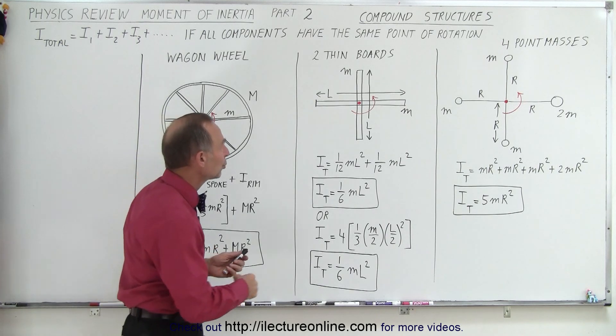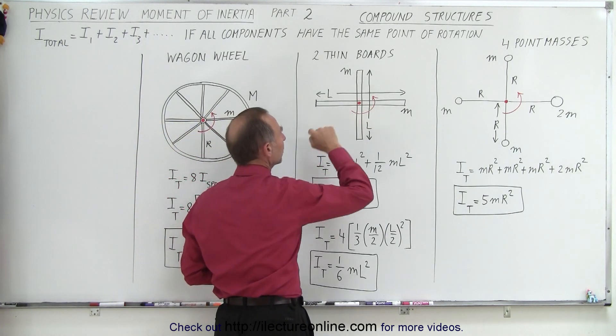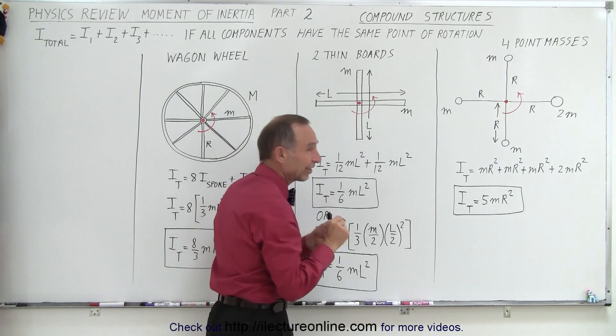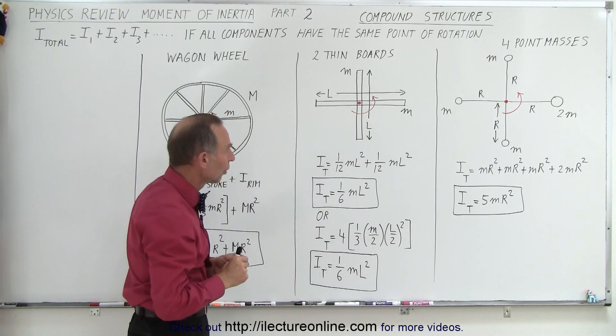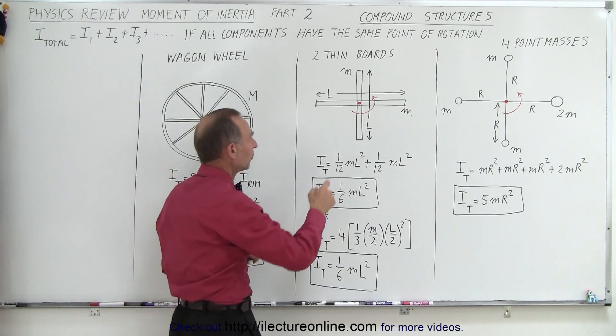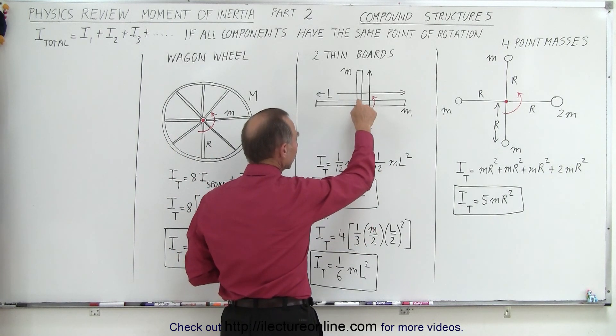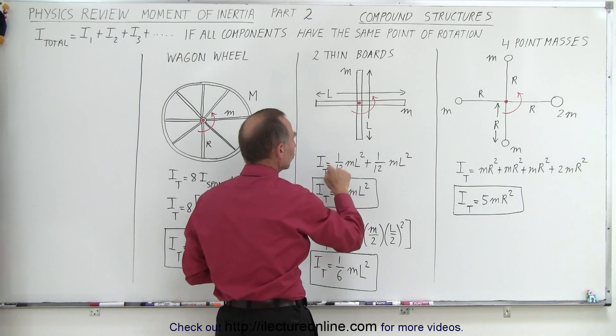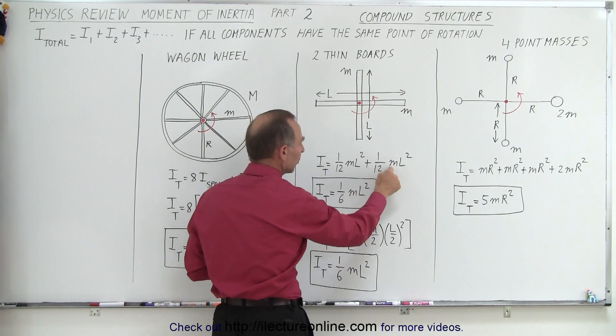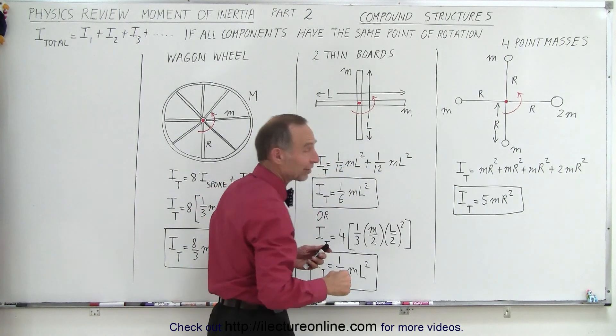What if we have two thin boards attached to the same common point of rotation, the point of rotation at the center of each of the two boards? Notice that the moment of inertia of a board of length l and mass m rotated about the center mass of the board is 1/12 mL squared. Since there's two of them, we add them together, and we get 1/6 mL squared.